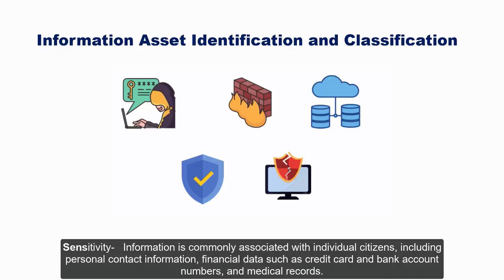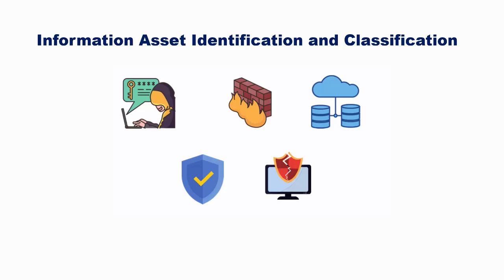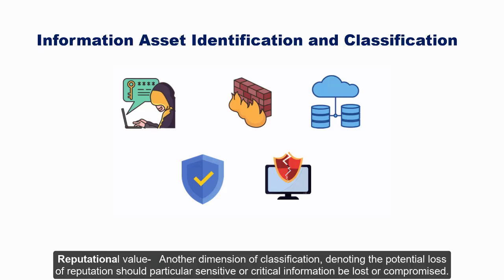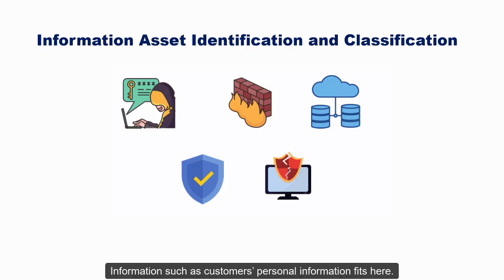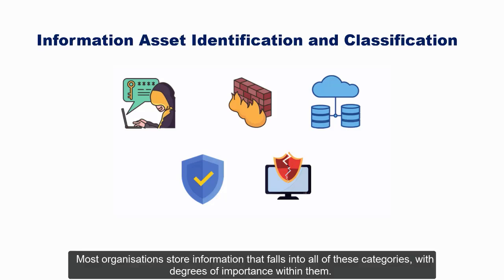Sensitivity refers to information commonly associated with individual citizens, including personal contact information, financial data such as credit card and bank account numbers, and medical records. Reputational Value is another dimension of classification, denoting the potential loss of reputation should particular sensitive or critical information be lost or compromised — customer personal information fits here. Most organizations store information that falls into all of these categories, with varying degrees of importance within them.